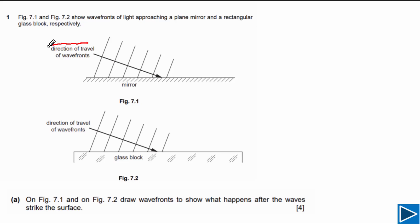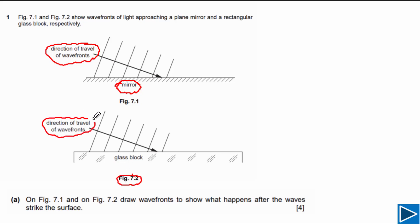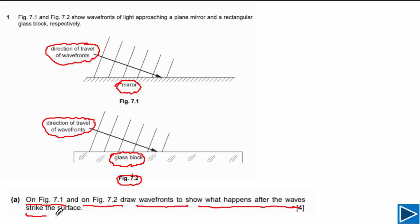For this question, the direction of travel of wave fronts is shown by the incident ray, and the surface in this case is a mirror. In figure 7.2, the direction of travel of wave fronts is also shown by the incident ray, and the surface in this case is a glass block. The question asks us to draw wave fronts on figure 7.1 and figure 7.2 to show what happens after the waves strike the surface.